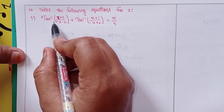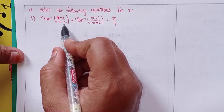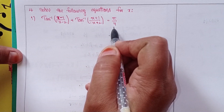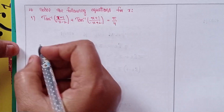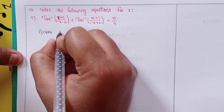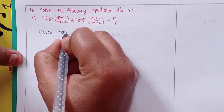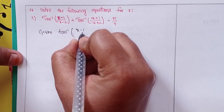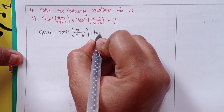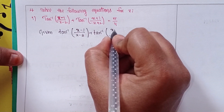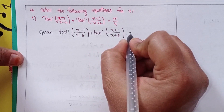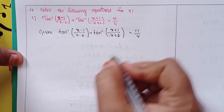First equation: tan⁻¹(x−1/x−2) + tan⁻¹(x+1/x+2) = π/4.